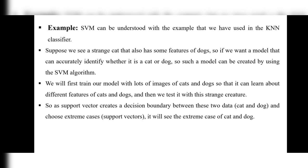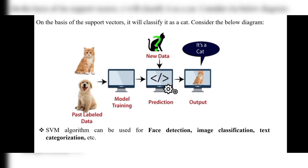First, we train our model with lots of images of cats and dogs so that it can learn about their different features, and then we test it with a strange creature. The support vector creates a decision boundary between the two classes — cat and dog — and chooses extreme support vectors. On the basis of support vectors, it classifies the input as a cat or dog. After training, the model will predict new data, such as a cat image, and output whether it is a cat or a dog. SVM can also be used for face detection, image classification, text categorization, and more.